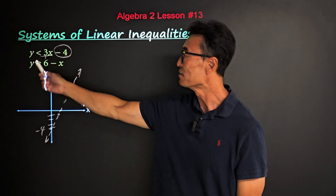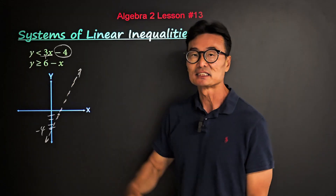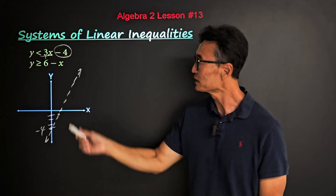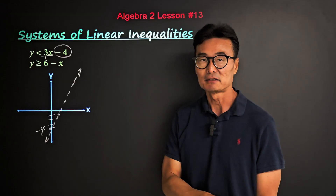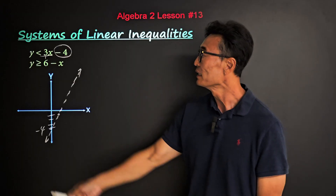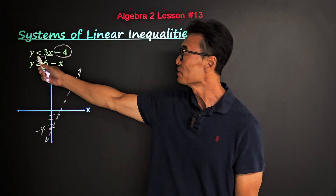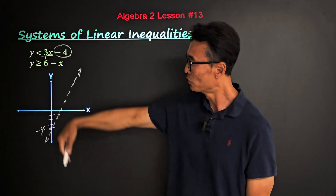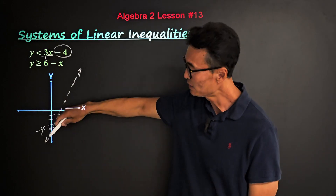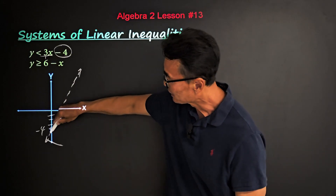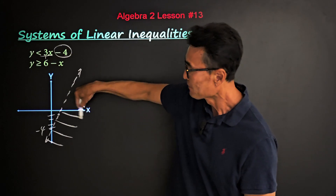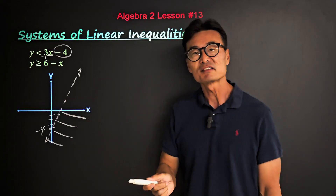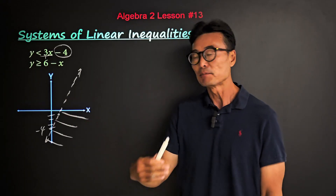Because it's less than, it's not going to be a solid line — it's going to be a dotted line. Since it's less than, we're going to shade below the line. Remember, you don't want to think of it as left and right, but always as above and below.